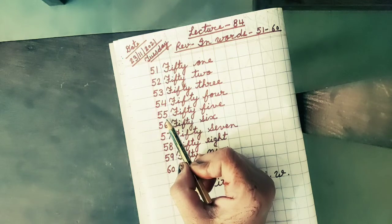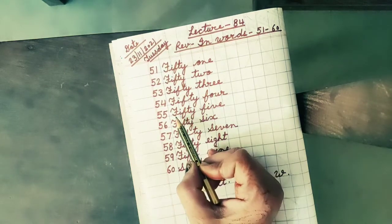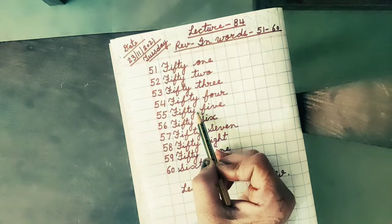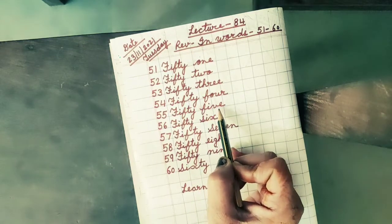Next number is 55. The spelling of 55 is F, I, F, T, Y, 50, F, I, V, E, 5.